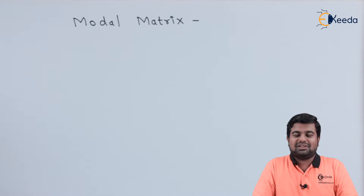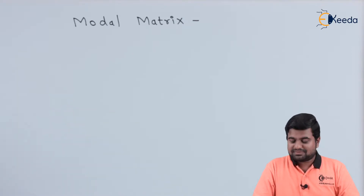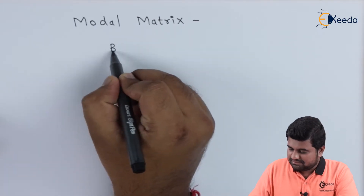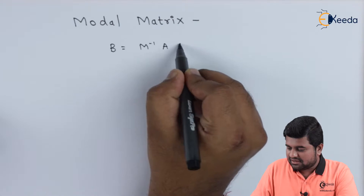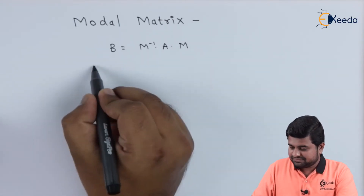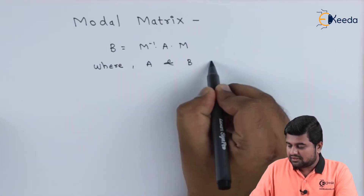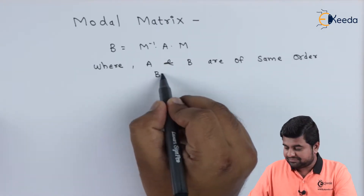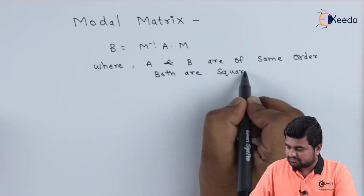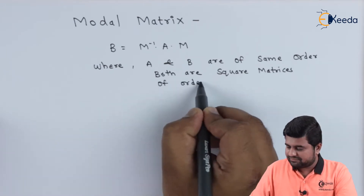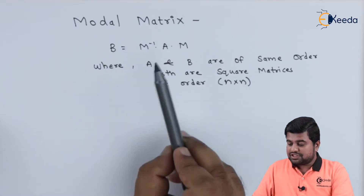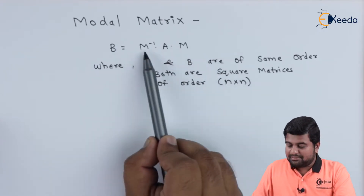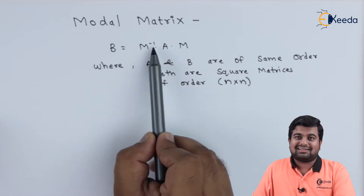Let us understand what is modal matrix by using the definition of similarity of matrices. When we say B and A are similar matrices, it has to satisfy this particular equation: B is nothing but M inverse into A into M, where A and B are square matrices of the same order n by n. This particular matrix M is called the modal matrix.